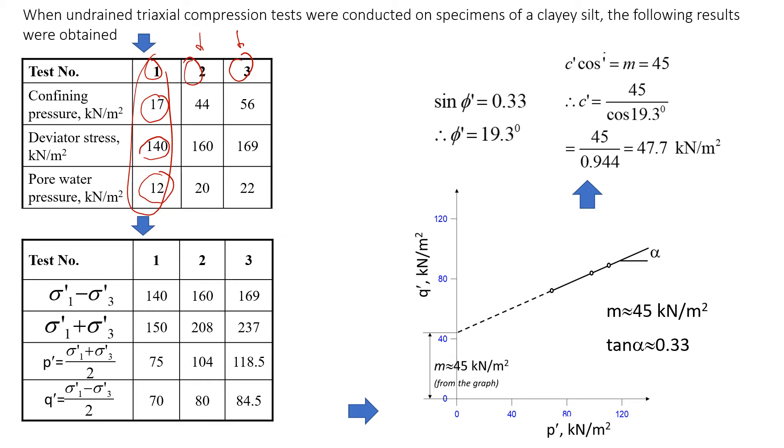Now I'm going to show you how we use the stress path approach to find the friction angle and cohesion for this particular soil. There was another video that I recorded a few days ago. In that case I showed how we can draw Mohr circles for each of the tests and then find a failure envelope.